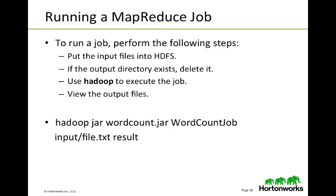To run a MapReduce job, first make sure that the input files are in HDFS. If the output directory already exists, you need to delete it. Then you use a Hadoop function to execute the job and view the output files. An example of that would be: hadoop jar wordcount.jar wordcountjob input/file.txt result — and that will output the result of wordcount into the result directory.